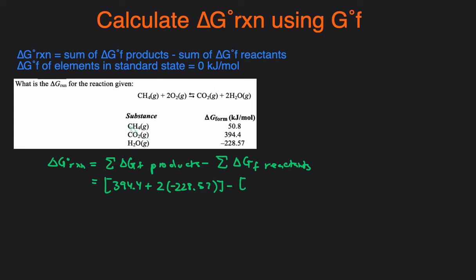We have one CH4 so it will be negative 50.8, and then we have two O2 so it will be two times the value of O2. The value of O2 is not given here and that's because O2 gas is an element in its natural or standard state, so its value will just be zero kJ per mole.